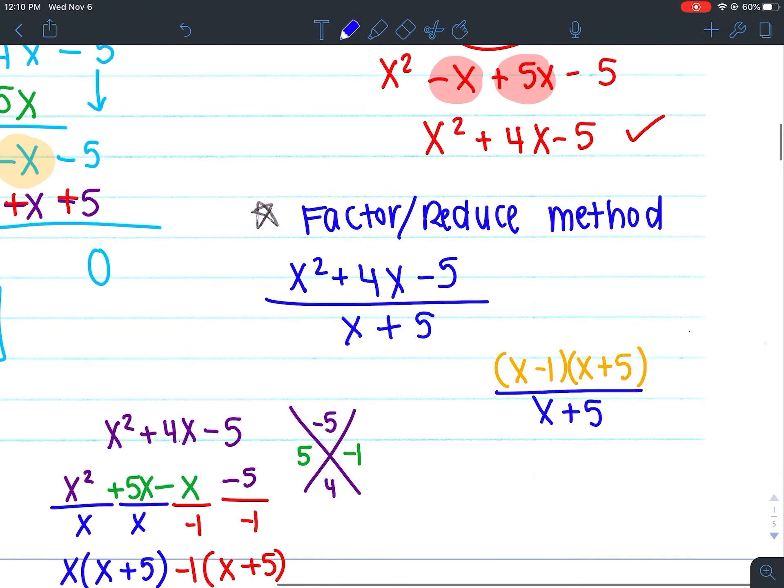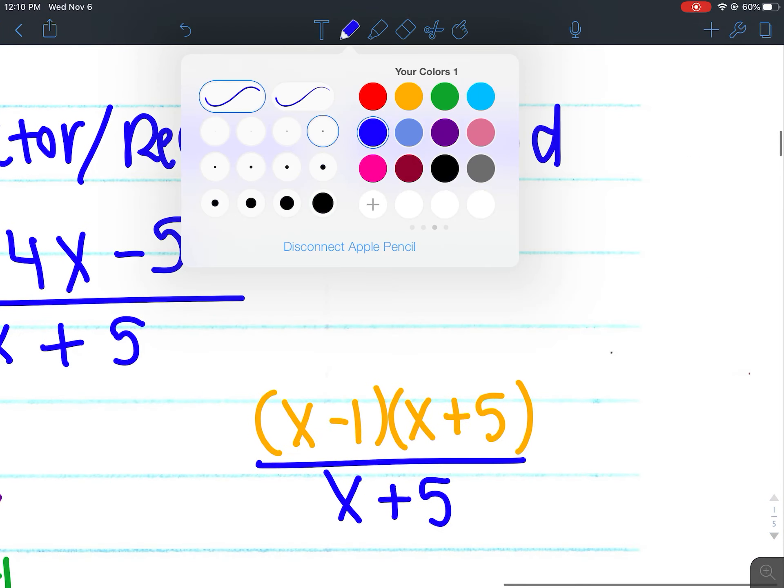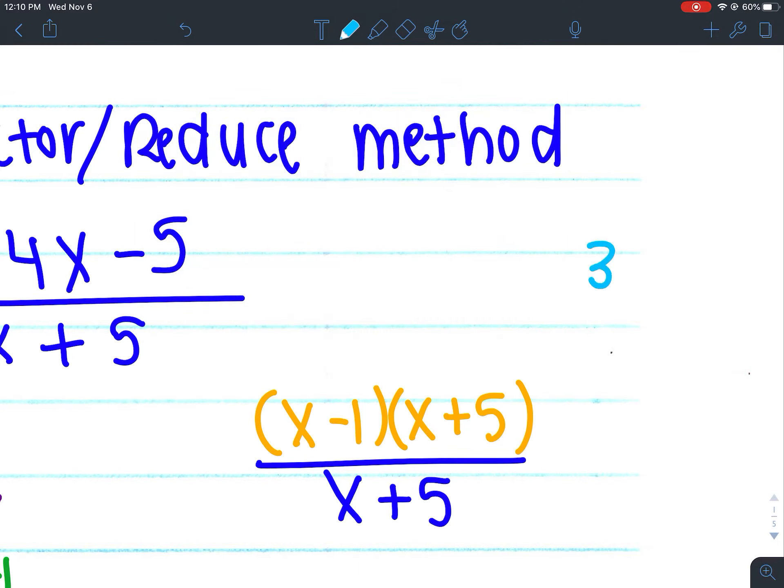So now after we factored, the next thing we do is reduce. So let's talk about what this could mean. If I have 3 times x divided by x, could I simplify this? Yes, right? Because x divided by x is 1. So these would cancel and I would just have 3 times 1, which is just 3.